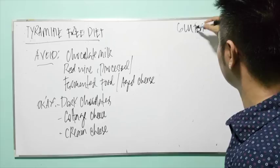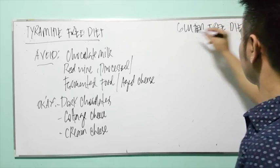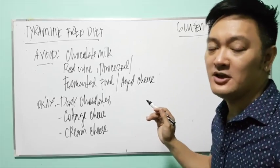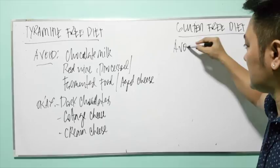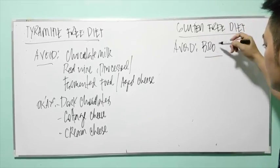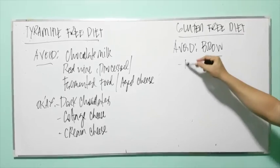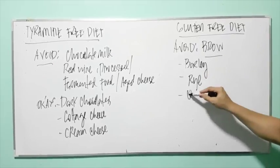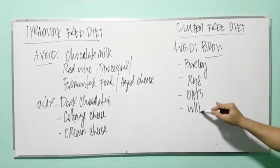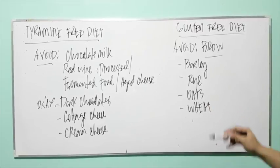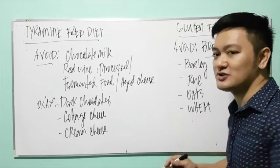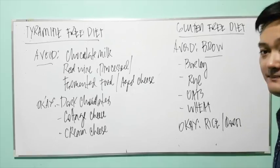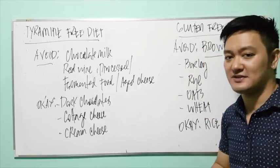Gluten-free diet is indicated for patients with celiac disease. You need to avoid BROW: Barley, Rye, Oats, and Wheat. However, rice and corn are okay to give to the patient.